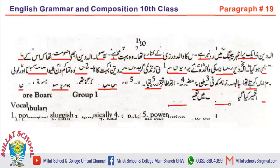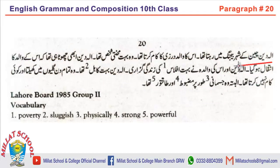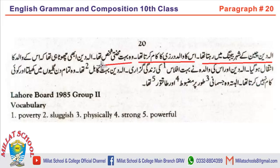Let's move to the next paragraph — again past tense. الہ دین چین کے شہر بیجنگ میں رہتا تھا — Aladdin lived in Beijing, a city of China. اس کا والد درزی کا کام کرتا تھا — simple past — his father was a tailor. وہ بہت محنتی شخص تھا — he was a very industrious man. الہ دین ابھی چھوٹا ہی تھا کہ اس کے والد کا انتقال ہو گیا — Aladdin was still young when his father died.